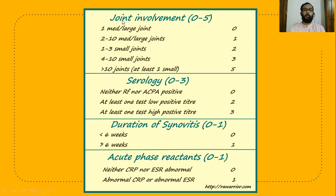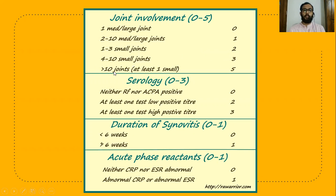In joint involvement, scoring ranges from 0 to 5. If one medium or large joint is involved, the score is 0. Large joints include mainly the shoulder, elbow, knee, hip, and ankle. Small joints include mainly the distal extremities — metacarpophalangeal and metatarsophalangeal joints. If 2 to 10 medium or large joints are involved, the score is 1. If 1 to 3 small joints are involved, the score is 2. If 4 to 10 small joints are involved, the score is 3. If more than 10 joints are involved with at least one small joint, the score is 5.